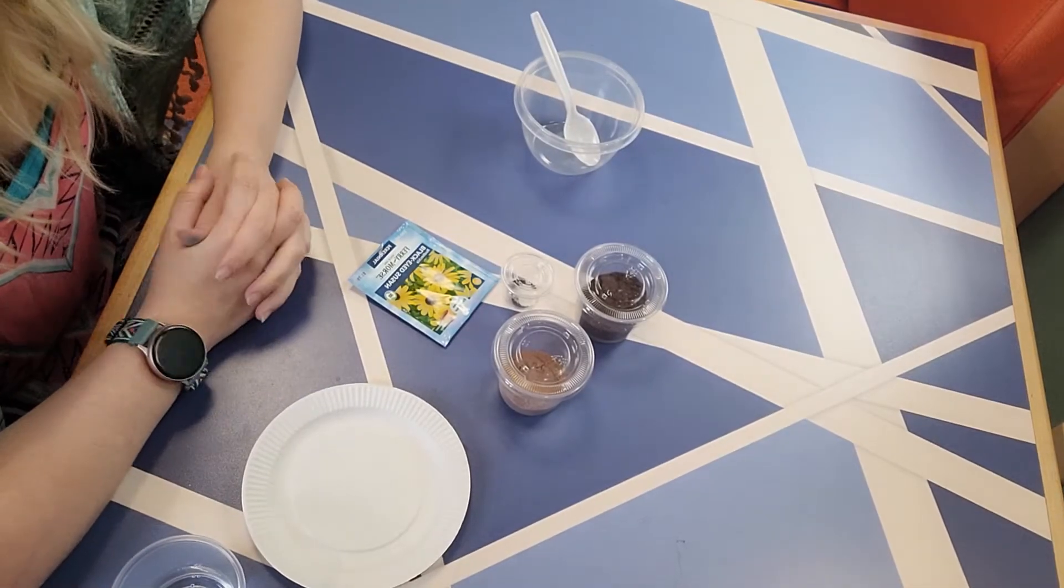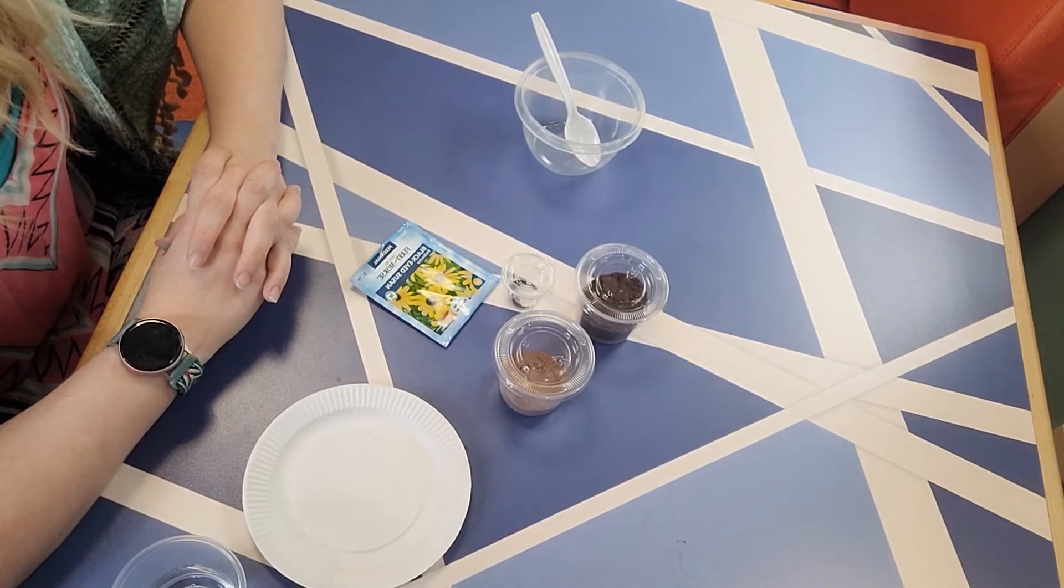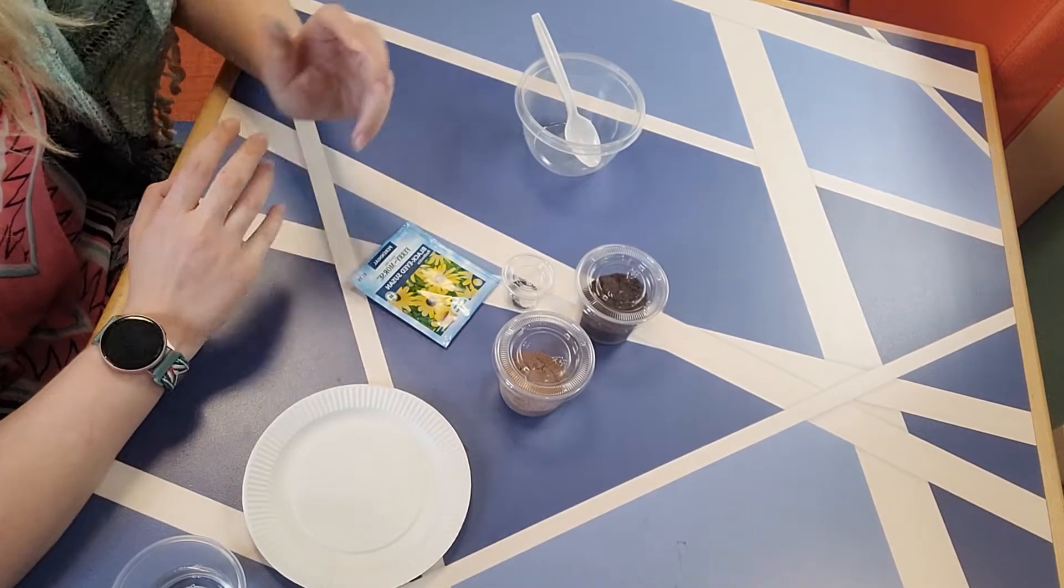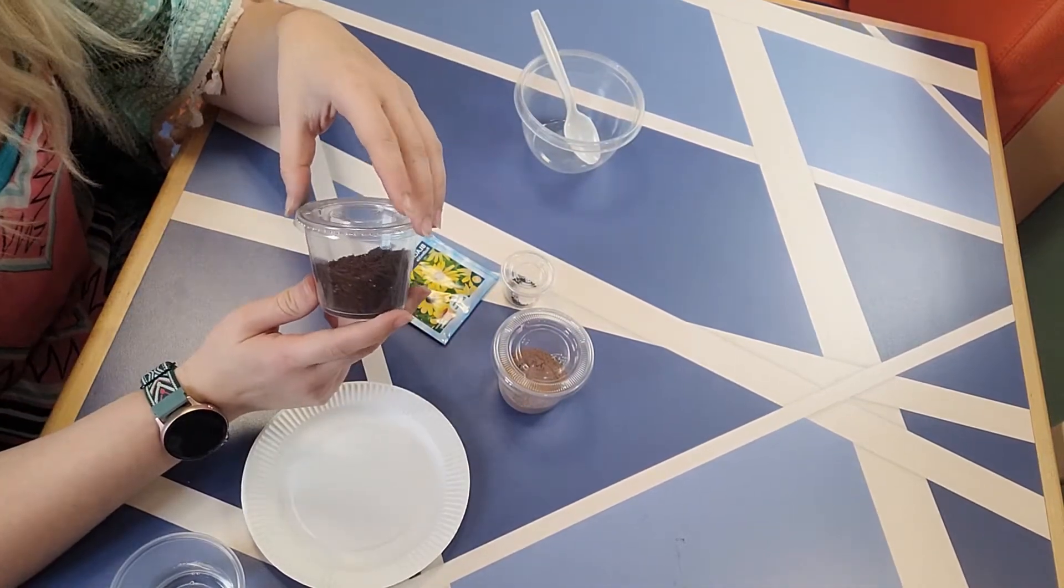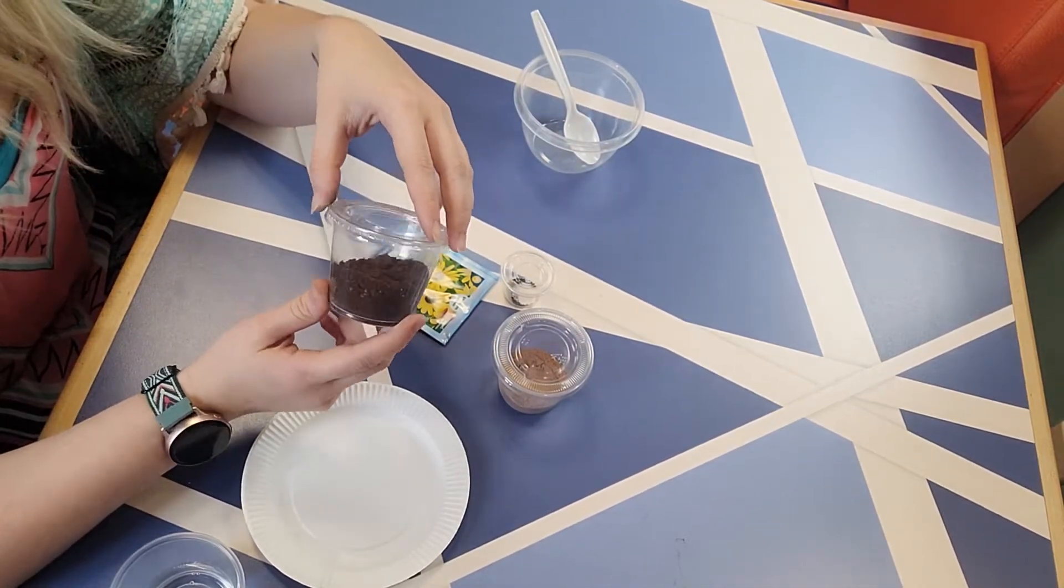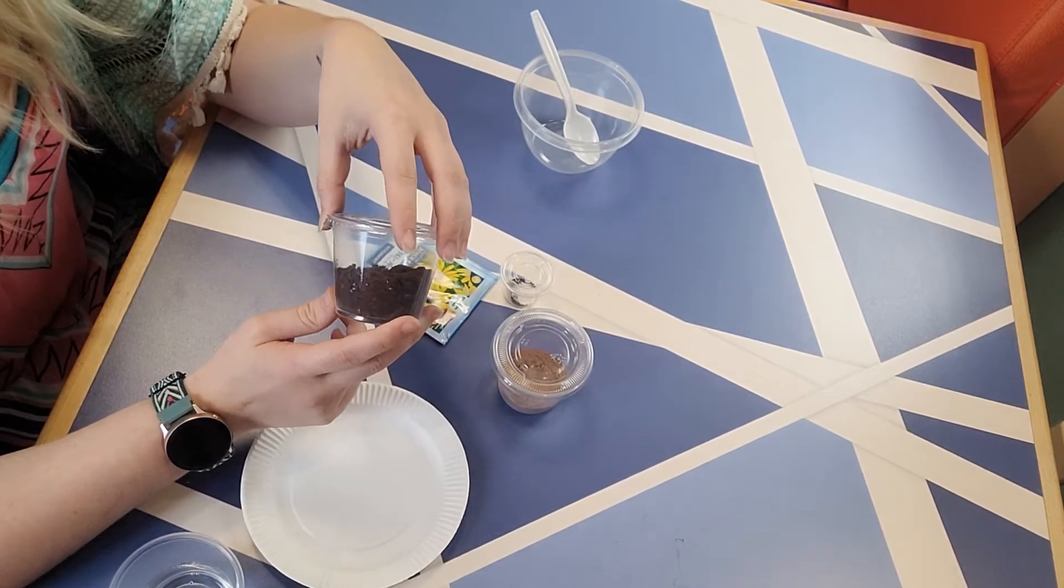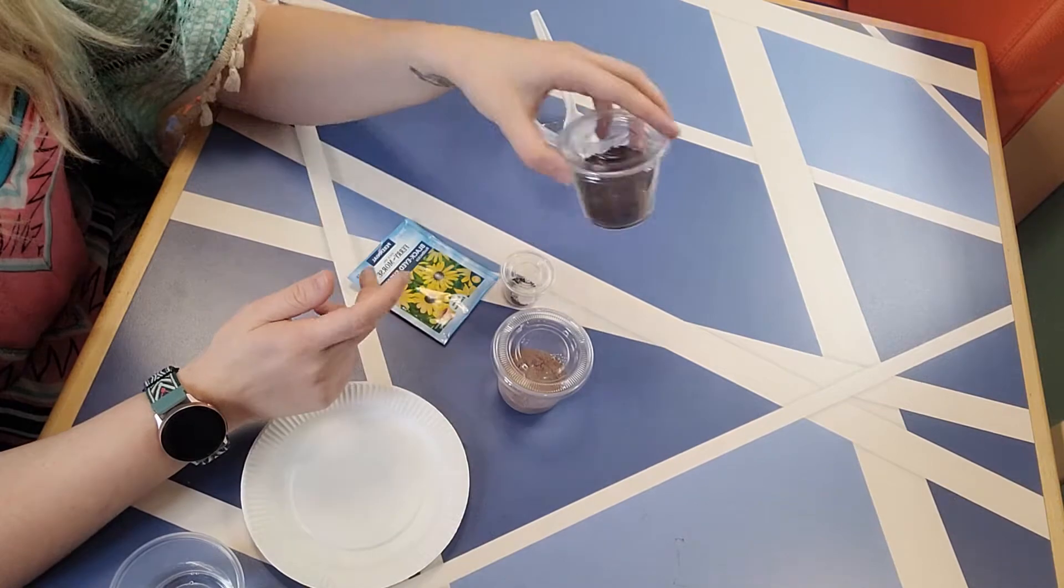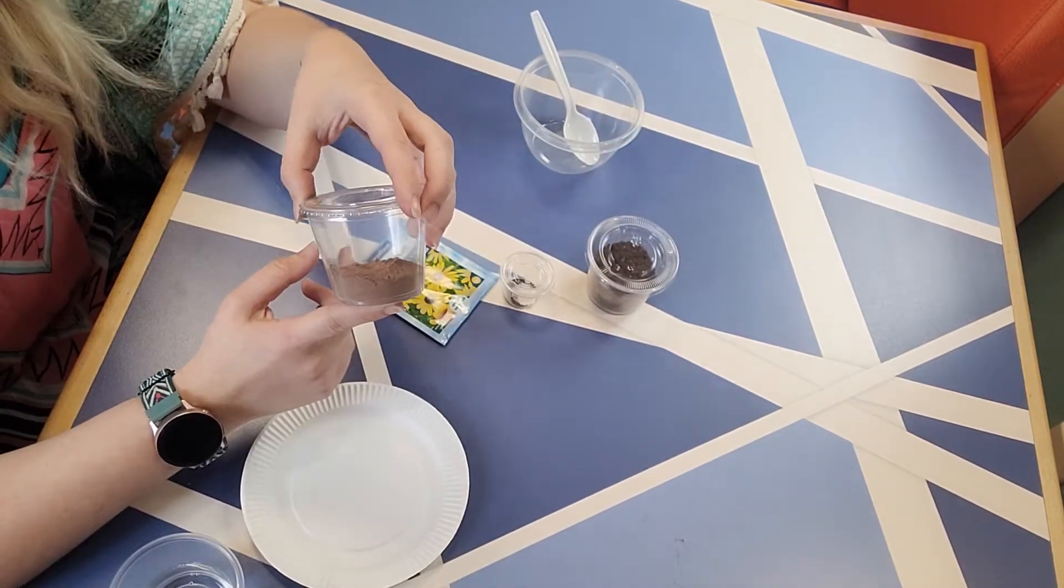All right you guys, so here are the things that would be included in the grab and go kit and the things you will need to make your own wildflower seed bombs. So the first thing you're going to need is soil. It's recommended that you use a peat-free compost because it is actually more environmentally friendly. The next thing you're going to need is red potter's clay powder. And then the last thing you'll need are wildflower seeds.